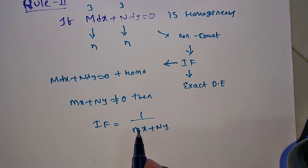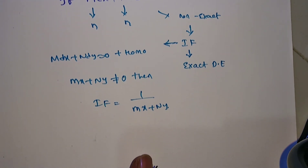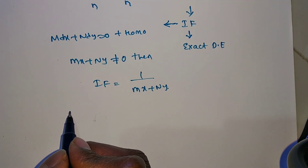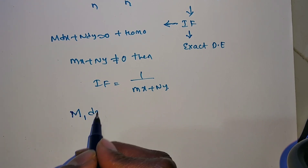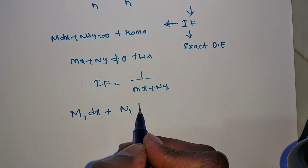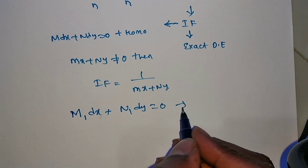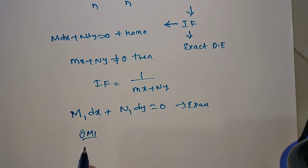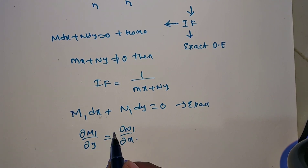We multiply this integrating factor with the non-exact differential equation. After multiplying, we get a new differential equation, which we rewrite as M1 dx + N1 dy = 0, which is exact. You can verify it: if ∂M1/∂y = ∂N1/∂x, then it is exact.